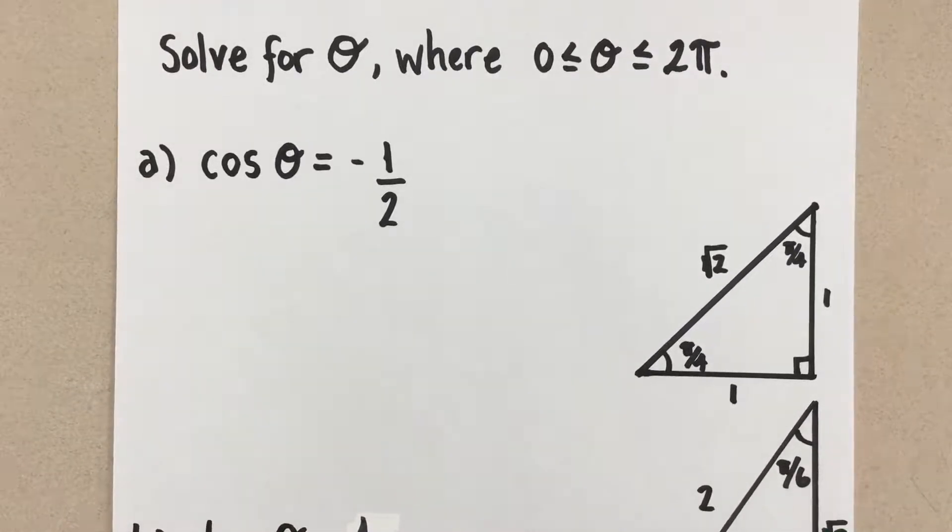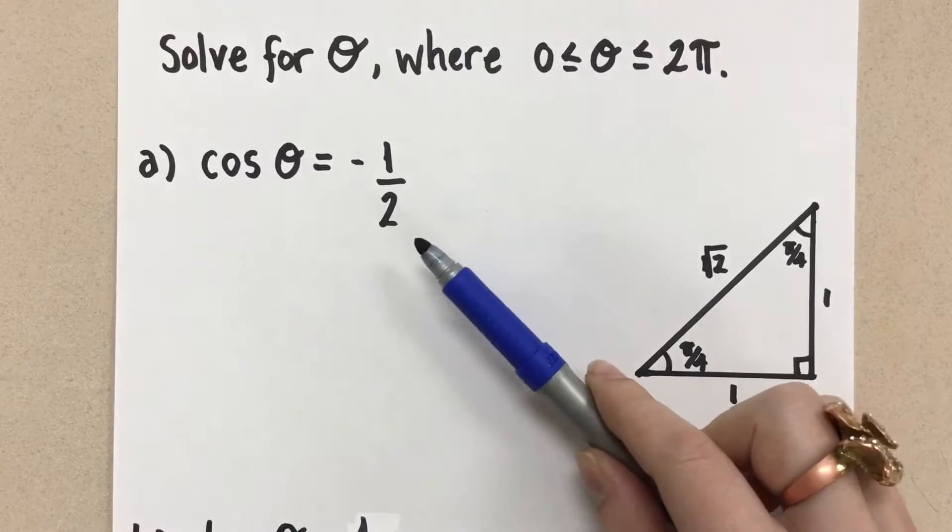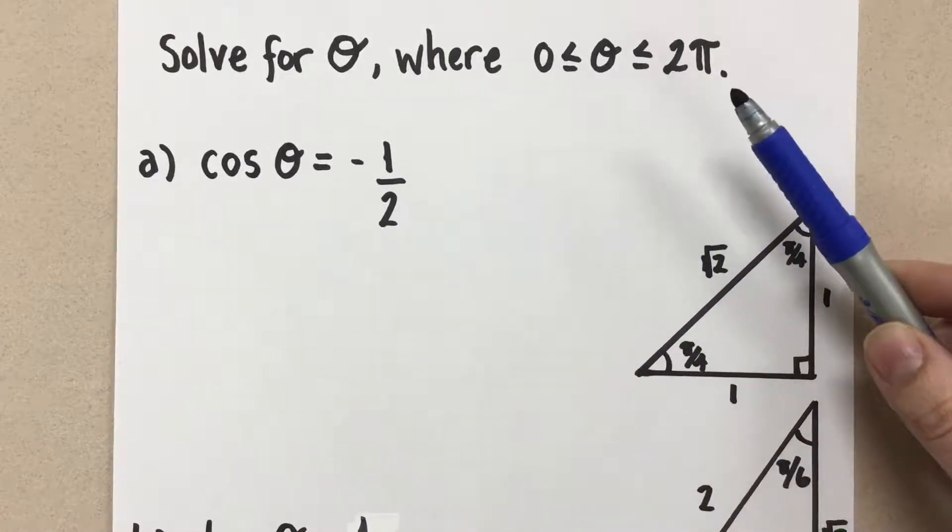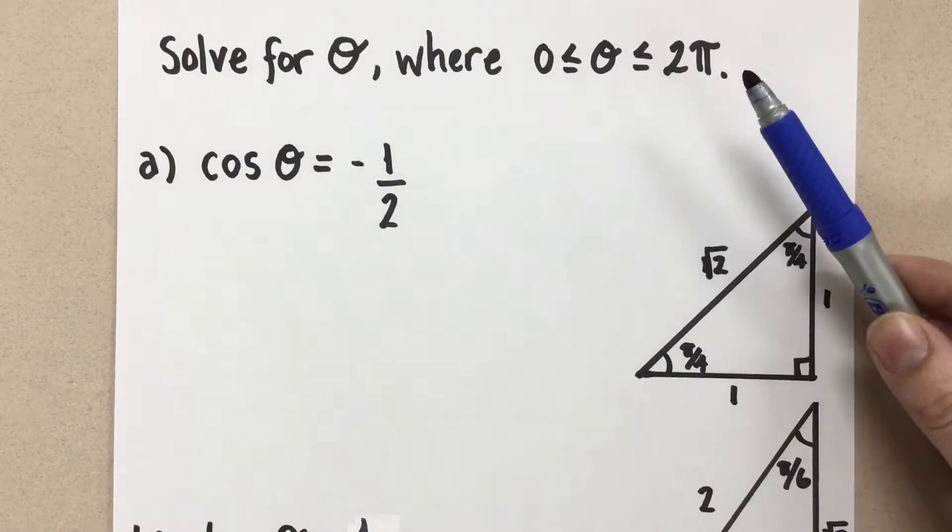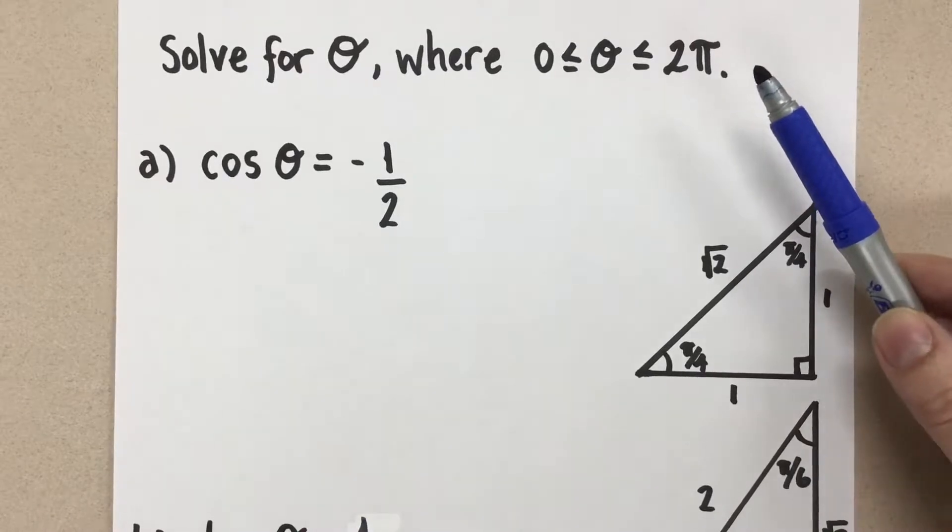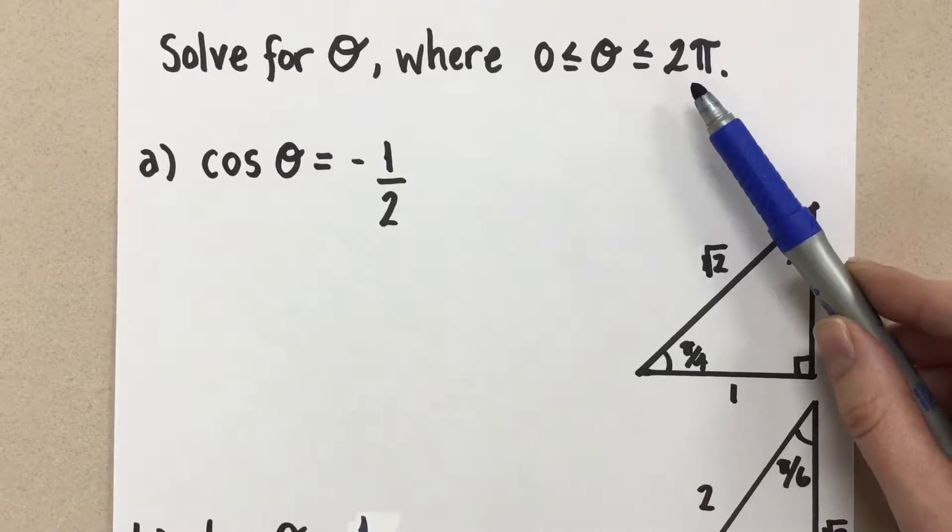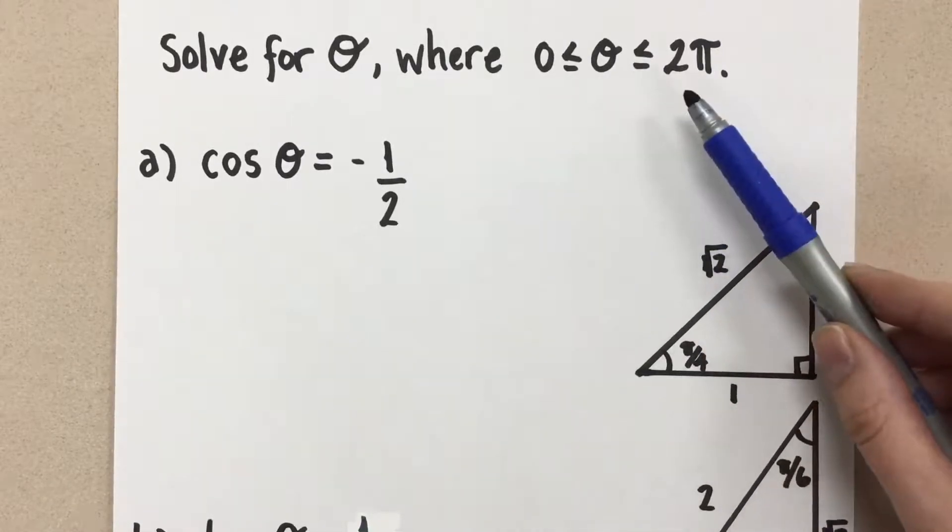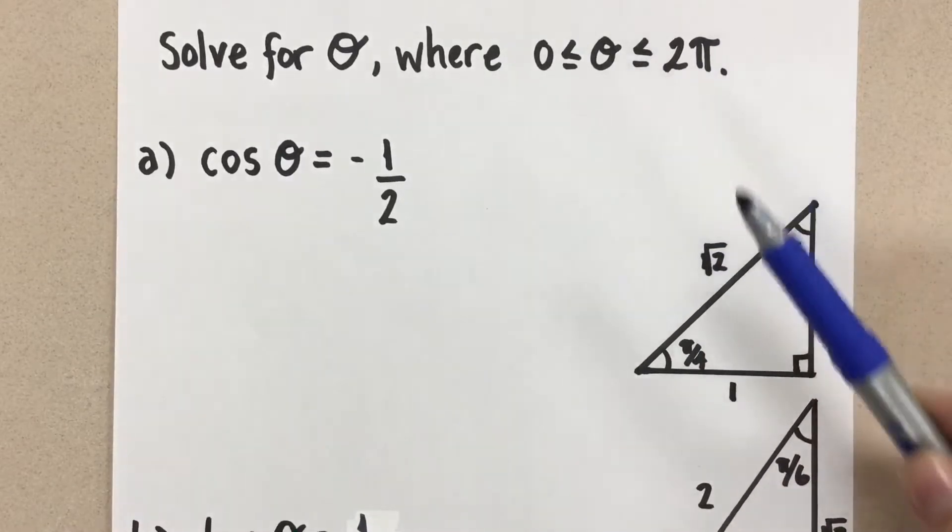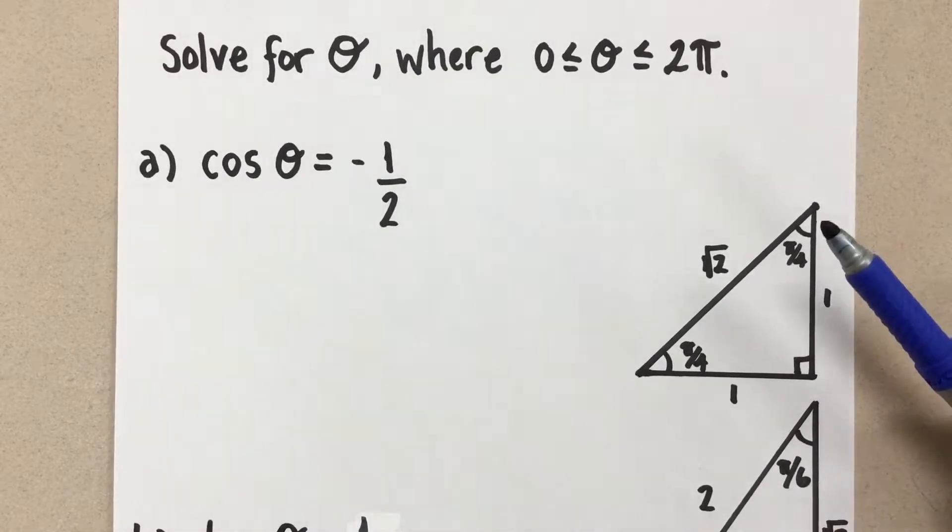So let's look at the first trig ratio. I also want to note that we've done this before in degrees, but we're doing it again now using radian measurement. So our angle is between 0 and 2π, where it used to be between 0 and 360 degrees. But all of our special angle values and triangles remain the same.